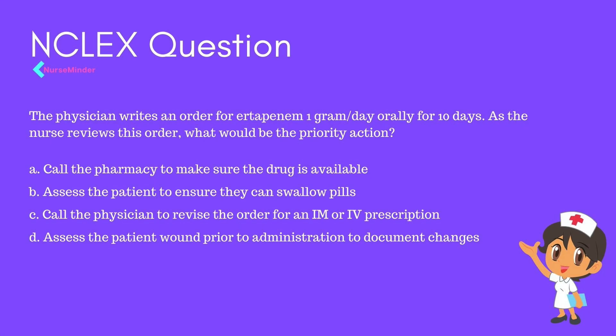Second NCLEX question: A physician writes an order for ertapenem 1 gram daily orally for 10 days. As the nurse reviewing this order, what is the priority action? 1) Call the pharmacy to ensure the drug is available; 2) Assess if the patient can swallow pills; 3) Call the physician to revise the order for IM or IV; 4) Assess the patient wound prior to administration. The correct answer is 3 — call the physician to revise the order, because carbapenems are only given intramuscularly or intravenously, never orally.